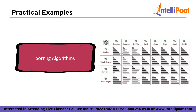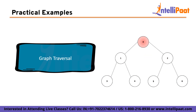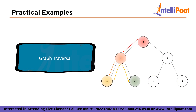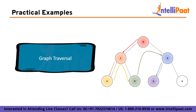Graph traversal algorithms such as breadth-first search (BFS) and depth-first search (DFS) are widely used in graph-related problems. BFS and DFS have a time complexity of O(V + E), where V is the number of vertices and E is the number of edges. In terms of space complexity, BFS typically requires a queue to store visited nodes, resulting in a space complexity of O(V). DFS uses a stack or recursion, resulting in a space complexity of O(V) for a recursive implementation.